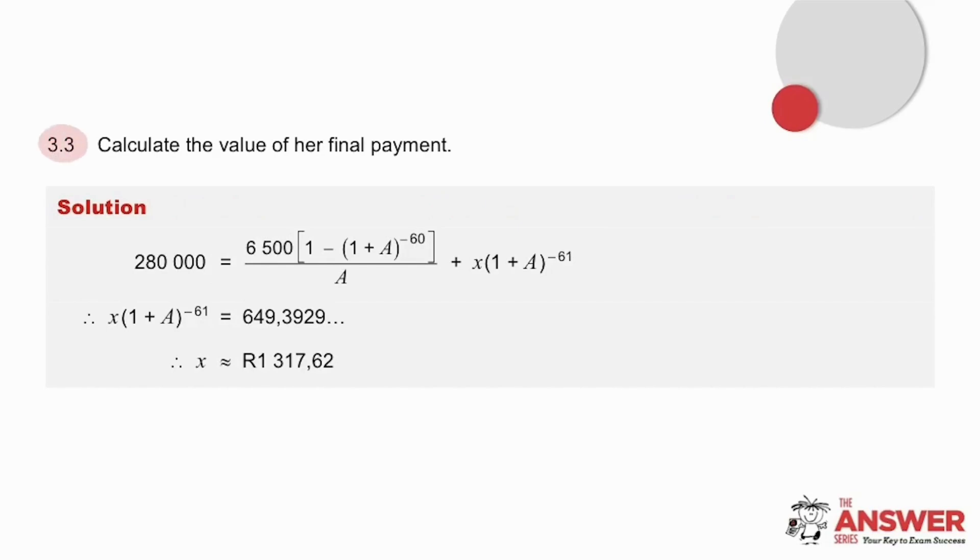Now let's have a look at how to work out what that final payment is. If we think about the loan as a present value and 60 payments of 6,500, these 60 payments would not quite cover it all. We need to therefore find this final payment, let's make it X, that will be made in the 61st month. Because we are using the present value formula we will need to scale this final payment back to the time frame when the loan was taken. In other words X will need to be scaled back 61 time periods. So solving for X we see that the final payment would need to be 1,317 rand and 62 cents.